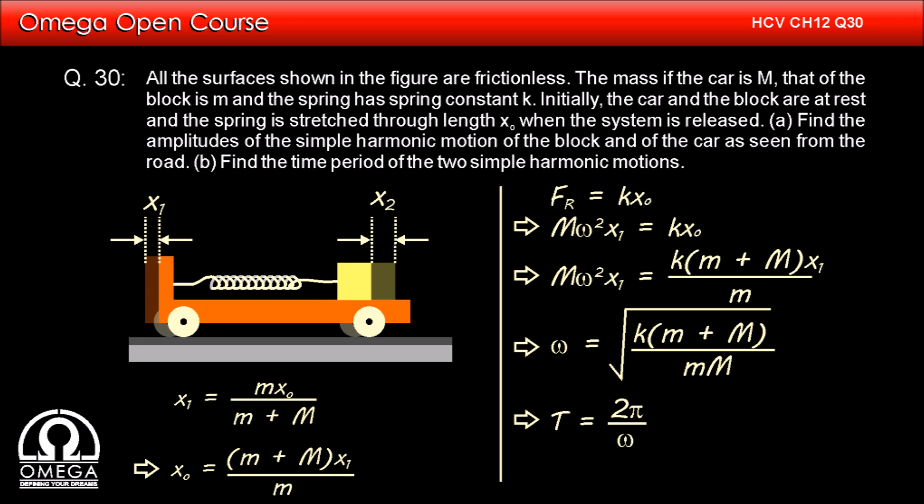Now time period of a system in SHM is given by 2 pi divided by omega, that is 2 pi root under small m into capital M divided by K into small m plus capital M. This is the answer to the second part of the question.